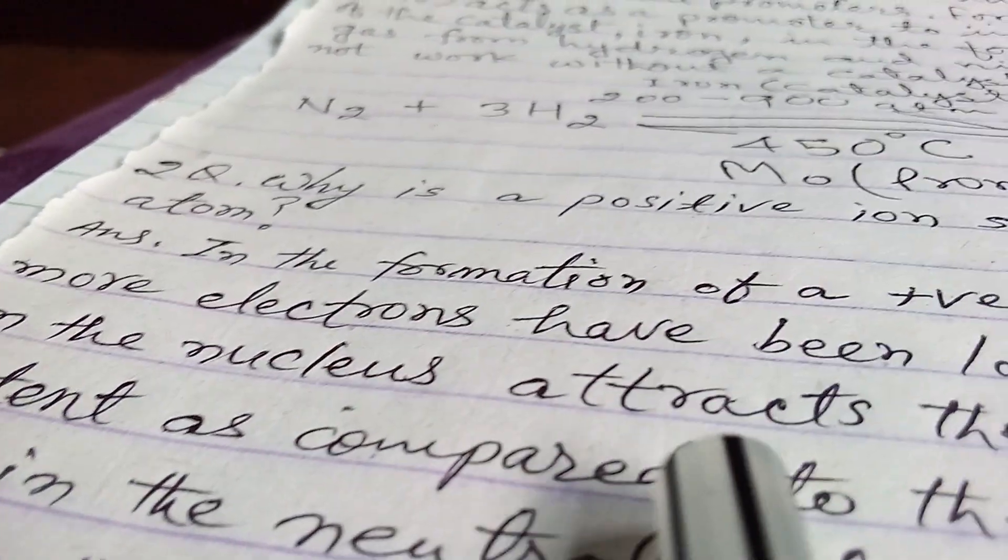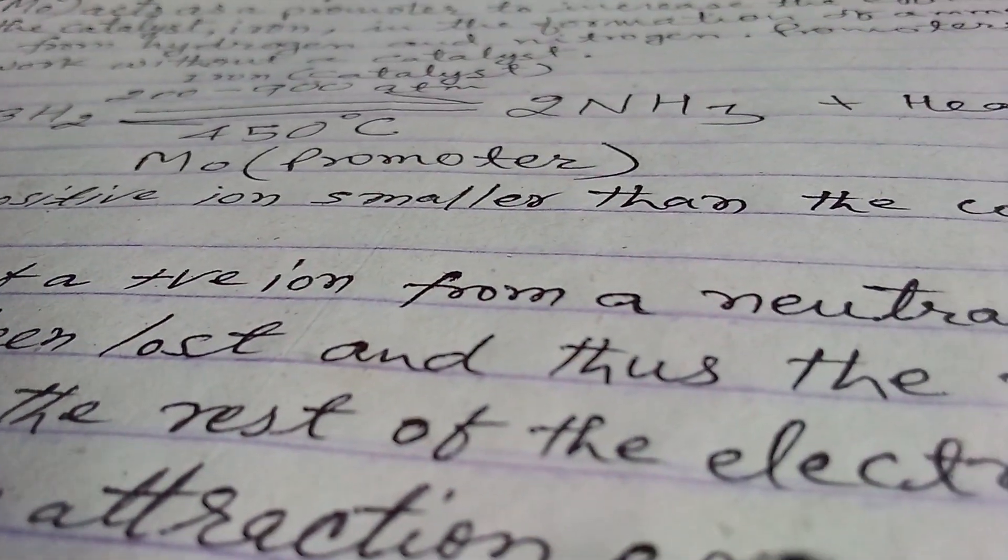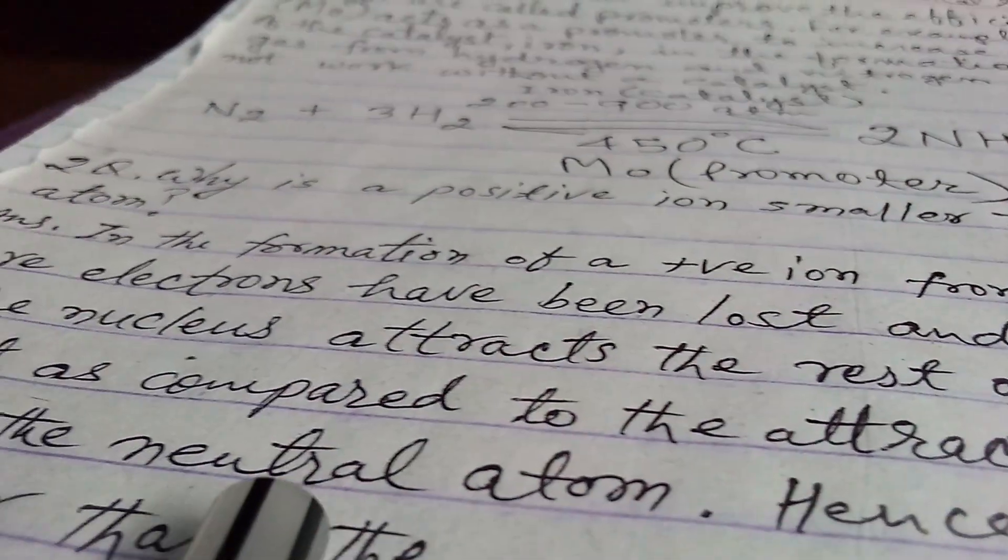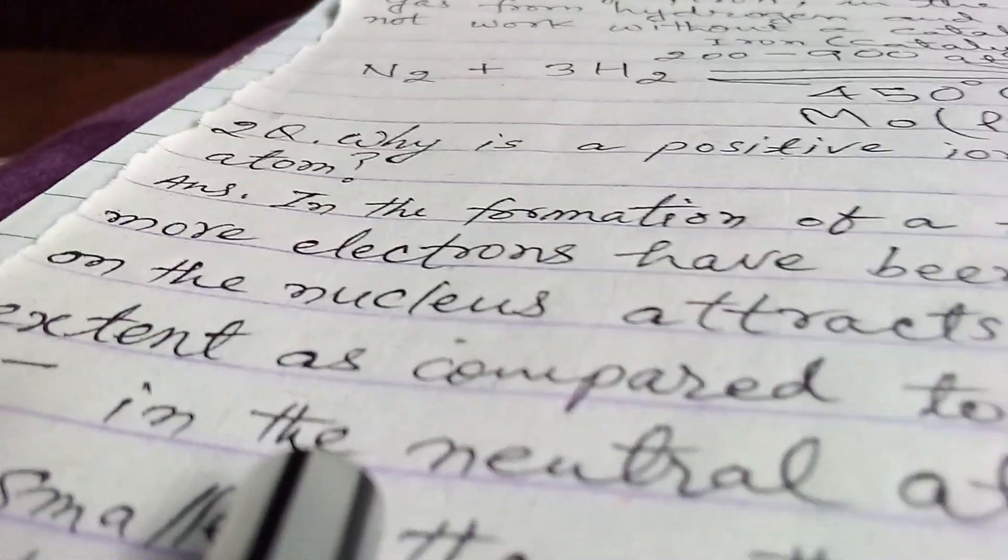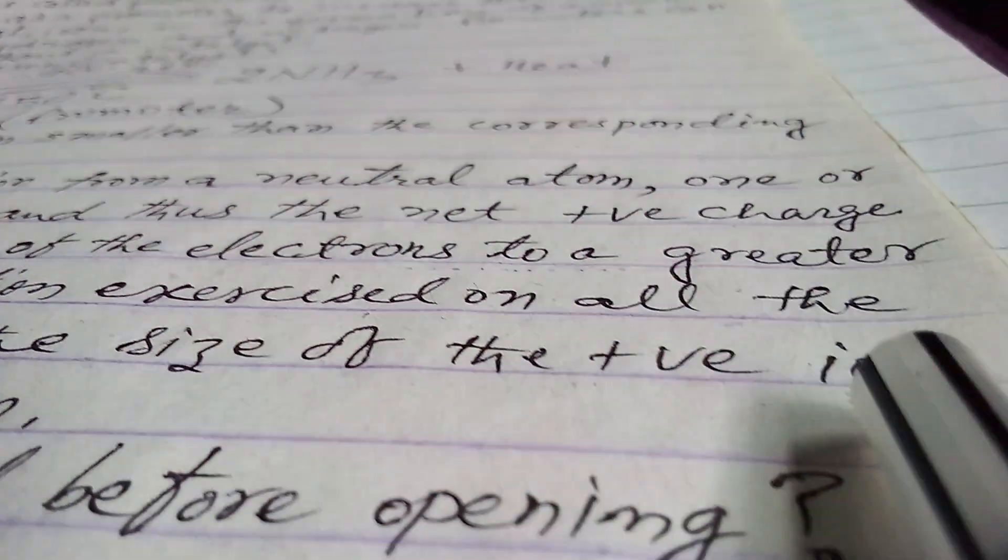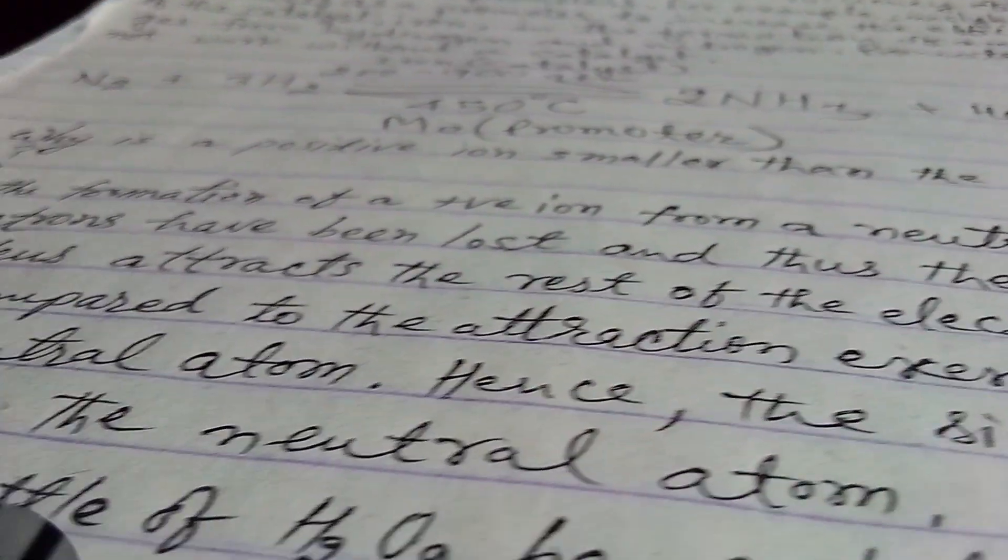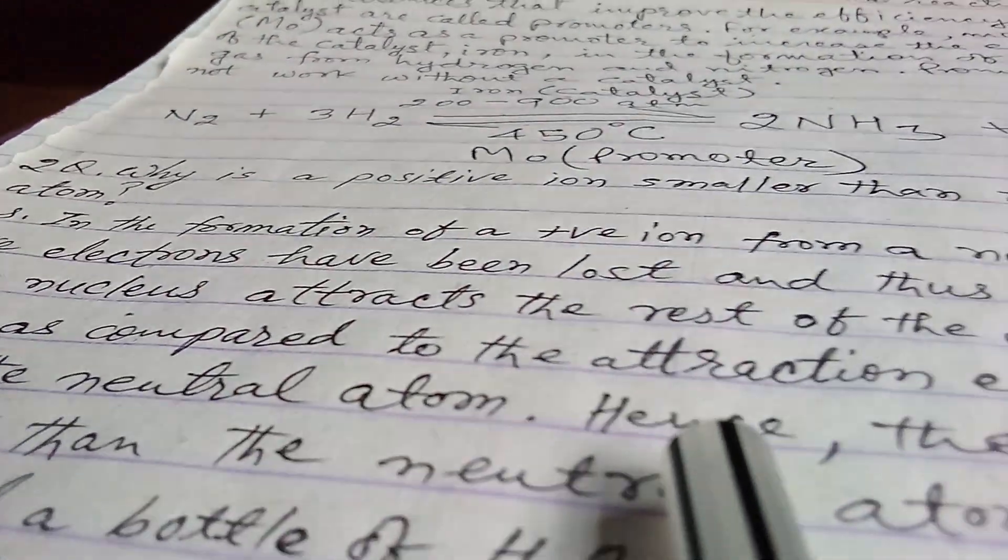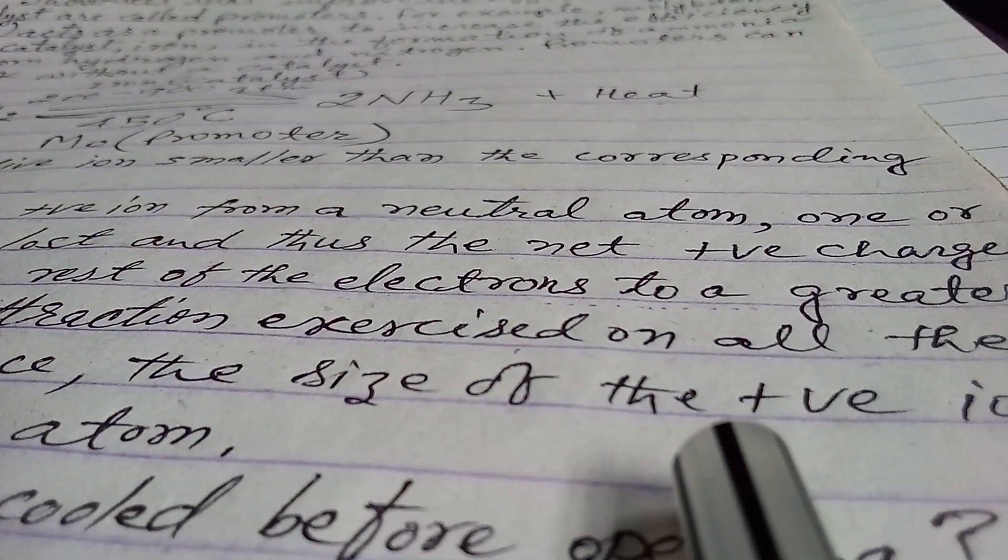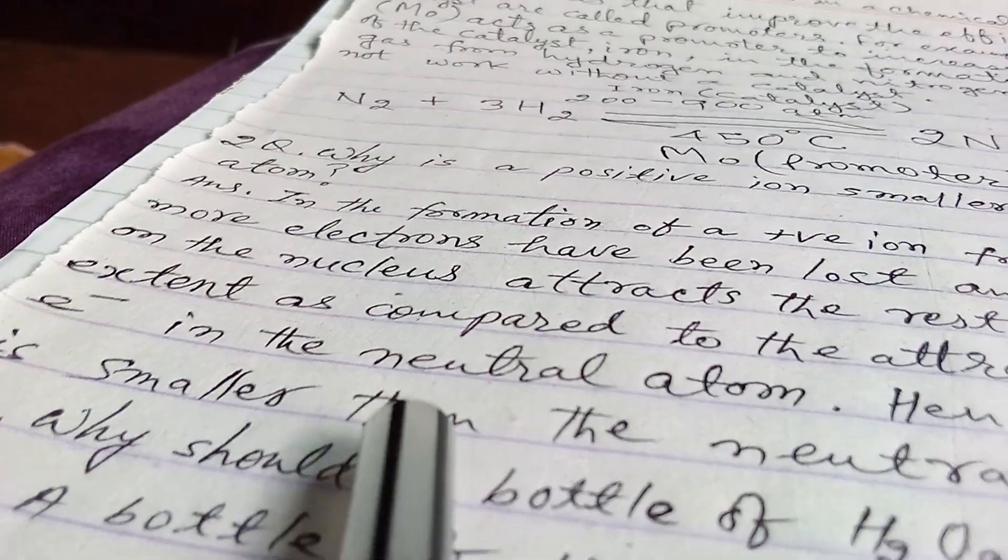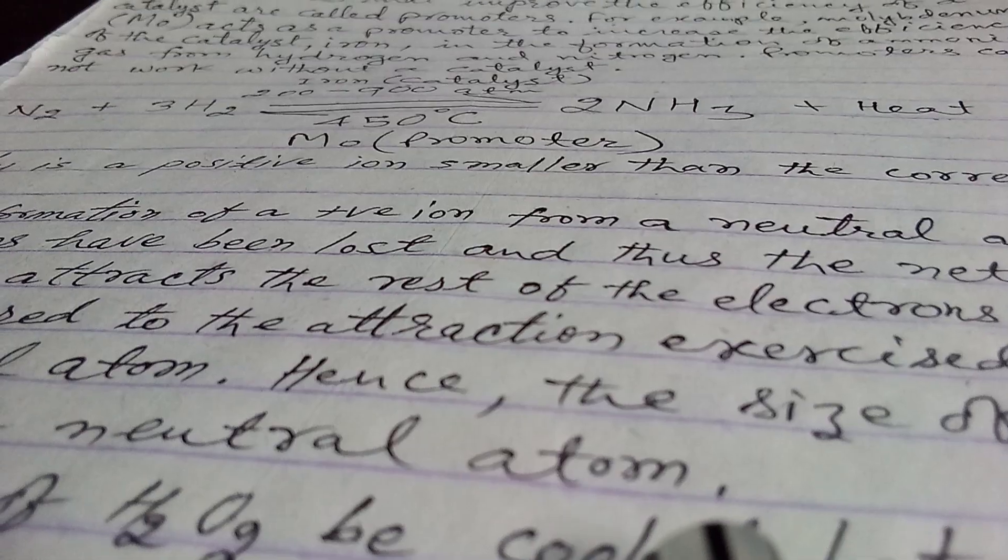on the nucleus attracts the rest of the electrons to a greater extent as compared to the attraction exercised on all the electrons in the neutral atom. Hence, the size of the positive ion is smaller than the neutral atom.